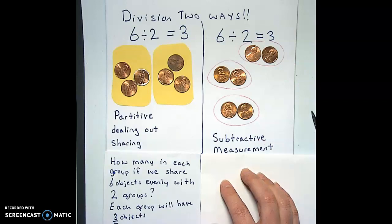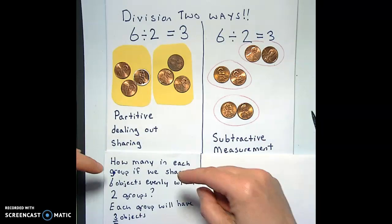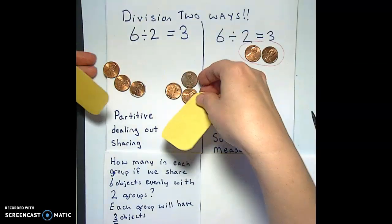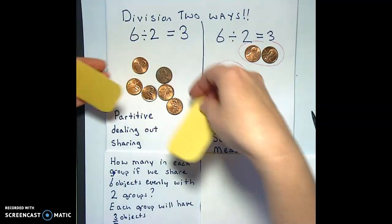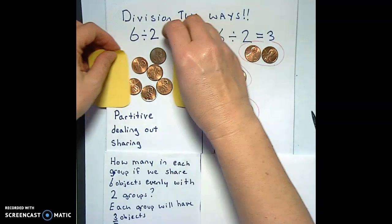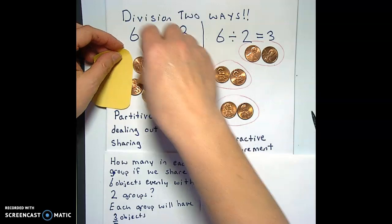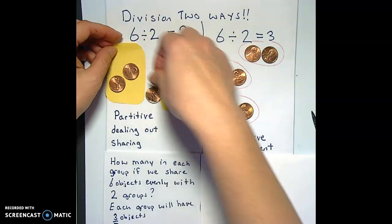Here's the language that goes with that operation for the partitive. Remember we started with six pennies and then we wanted to figure out how many would be in each group if we shared evenly into two groups.